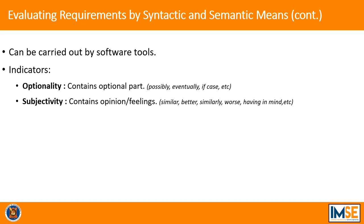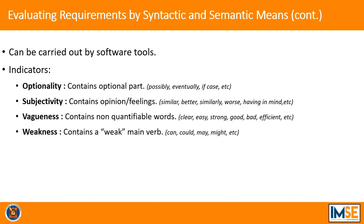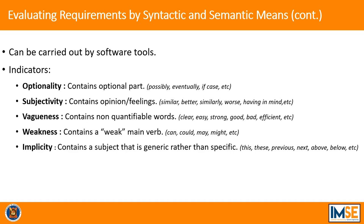Subjectivity is when it contains feelings or opinions — words like 'similar,' 'better,' 'worse,' 'similarly,' 'having in mind,' etc. Vagueness is when it contains non-quantifiable words like 'clear,' 'easy,' 'difficult,' 'strong,' 'bad,' 'efficient,' etc. Weakness is when it contains a weak main verb like 'can,' 'could,' 'may,' 'might,' 'should,' etc. Implicity is when it contains a subject that is generic rather than specific, like 'this,' 'previous,' 'next,' 'above,' 'below,' etc. Multiplicity is when it contains more than one main verb, direct or indirect complement — words like 'and,' 'or,' etc.